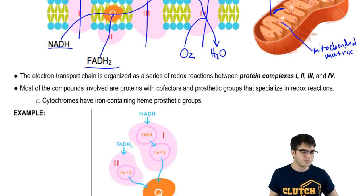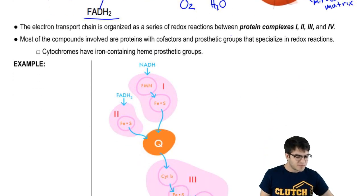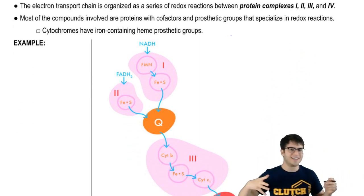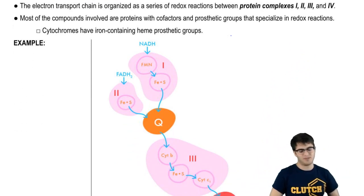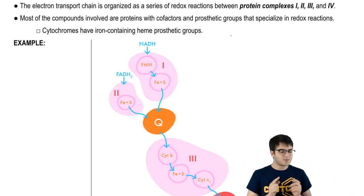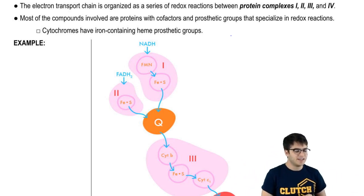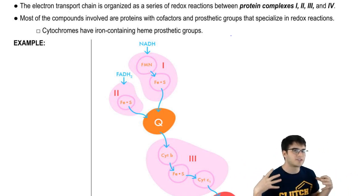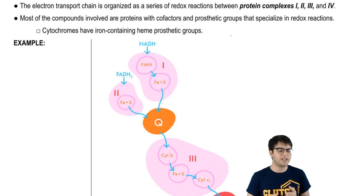What's the deal with these redox reactions? Well, you might have noticed that the electron transport chain is organized into four protein complexes. And those protein complexes contain reaction centers. And these reaction centers are good at doing redox reactions.